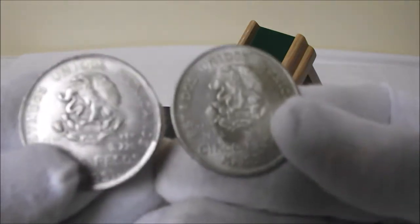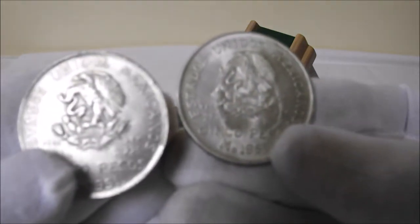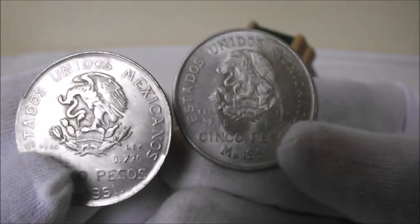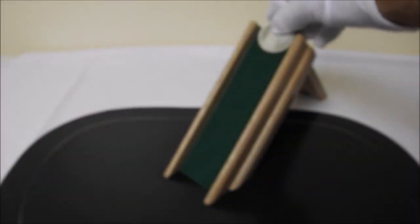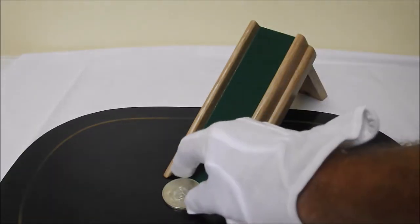On to a bit of Mexican silver which is an even lower percentage—it's 72%. This is Cinco Pesos from 1951 I believe. So let's try one of these down the slide and see the reaction with the magnets. Nice and slowly, as you can see there.